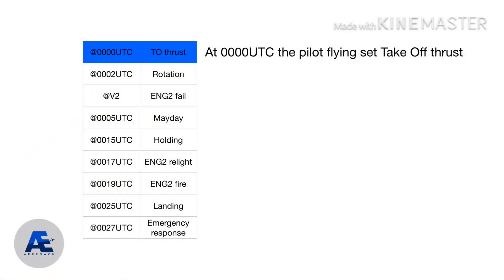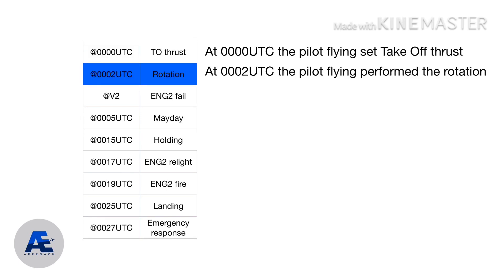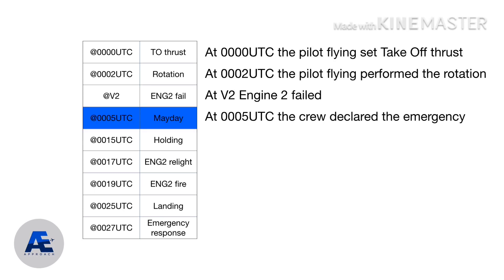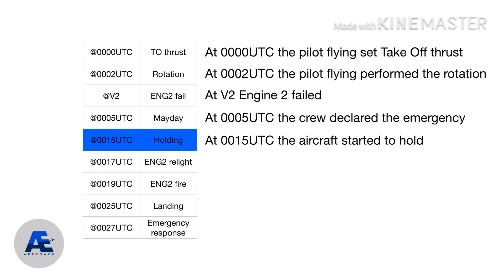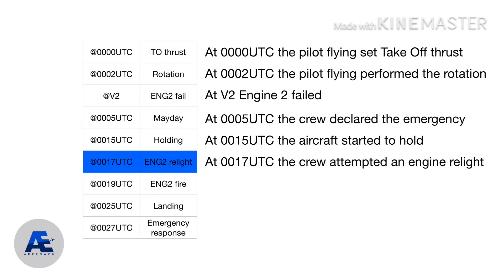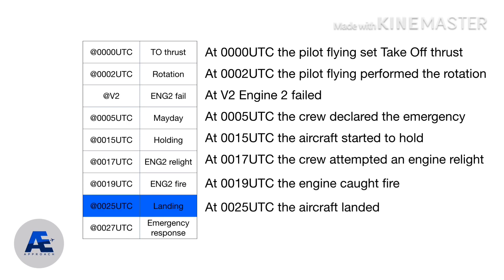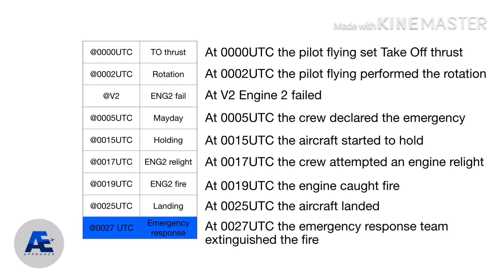Now let's make phrases with each event. At 0000 UTC the pilot flying set takeoff thrust. At 02, the pilot flying performed the rotation at V2. The engine 2 failed at 05. The crew declared the emergency at 15. At 15 the aircraft started to hold. At 17 the crew attempted an engine relight. At 19 the engine caught fire. At 25 the aircraft landed. And at 0027 the emergency response team extinguished the fire.